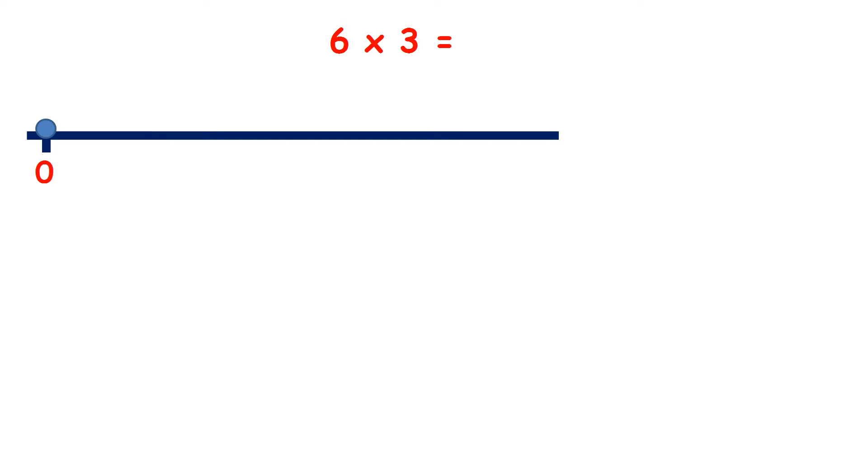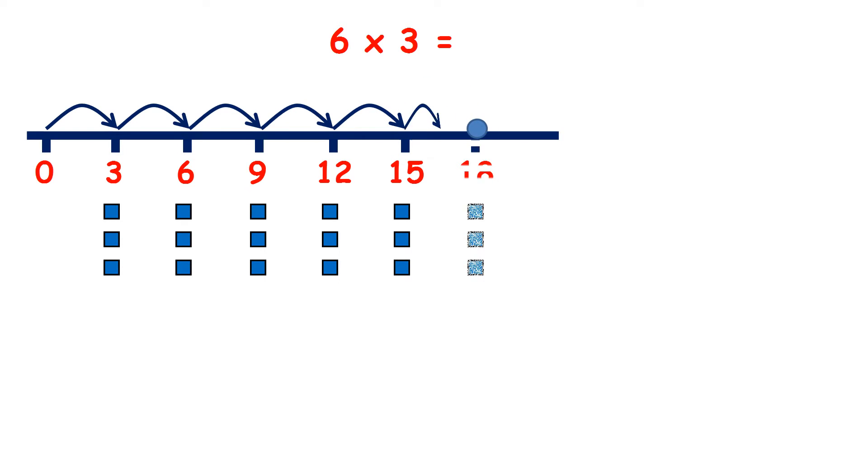So if we want to do 6 times 3, we can count in steps of 3 six times. So we have 3, 6, 9, 12, 15, 18. So now I can see we have 6 groups of 3, so our answer is 18.